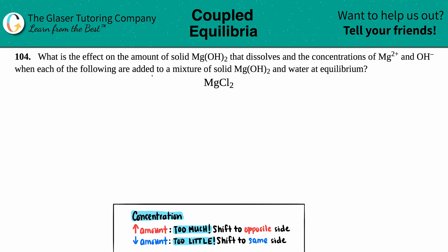Number 104. What is the effect on the amount of solid Mg(OH)2 that dissolves and the concentrations of Mg2+ and OH- when each of the following are added to a mixture of solid Mg(OH)2 and water at equilibrium? And then we have MgCl2.